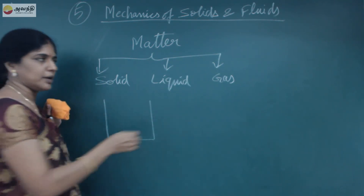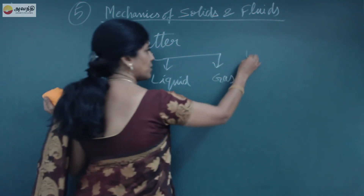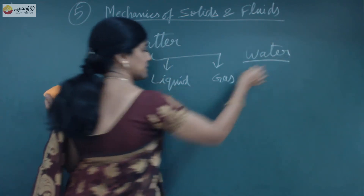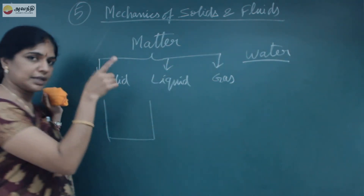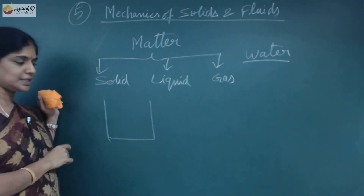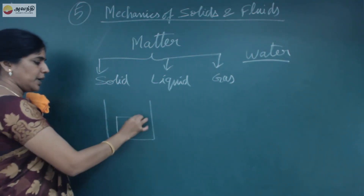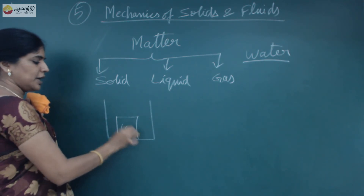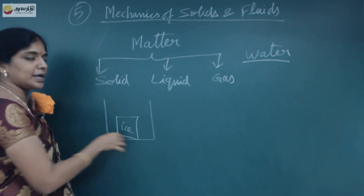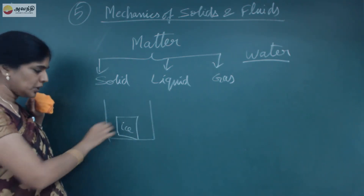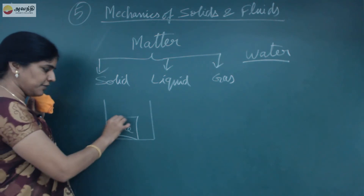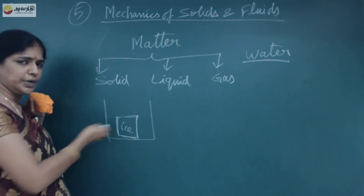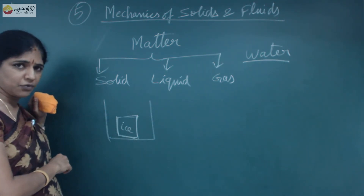A very good example of matter existing in all three states is water. If water is very cool, there is ice. Here I have ice in a beaker — it has a definite shape, it is a cube, and it is occupying some volume.